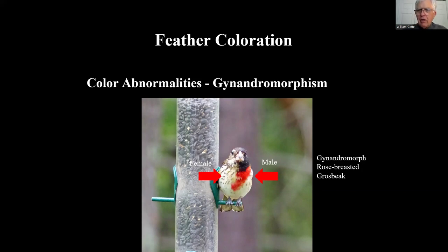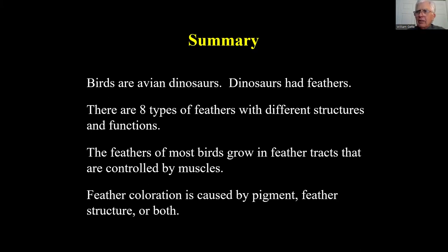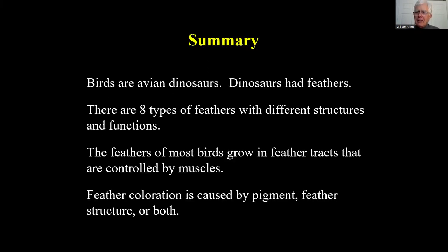In summary: birds are avian dinosaurs — tell your grandkids you saw a dinosaur today. There are eight types of different feather structures with different functions — flight feathers are very different from down feathers in form and function. Feathers on most birds grow in feather tracks controlled by muscles, with apteria between tracks for incubating eggs, tucking legs in, and regulating body temperature. Feather coloration is caused by pigment, feather microstructure, or both. And that's what I have to talk about today — happy to answer any questions.